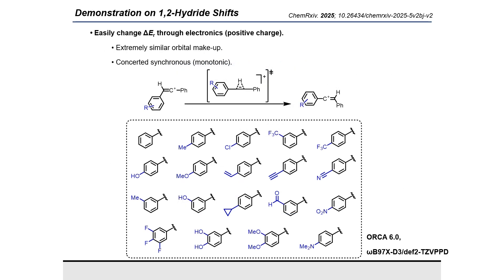We then demonstrated this in a number of reaction classes. The first one was the 1,2-hydride shift on different vinyl carbocations. These can be easily modified, they are all very similar chemical species, and so the orbital makeup of the transition states and the minima is very similar across all of the different substrates that we studied.